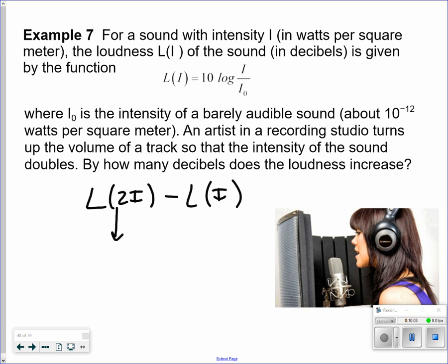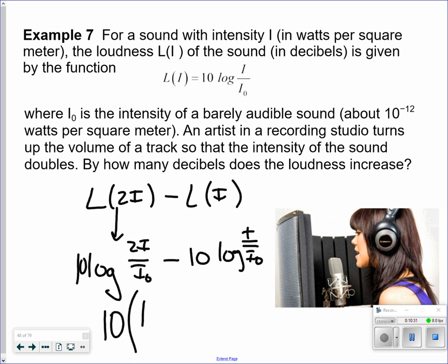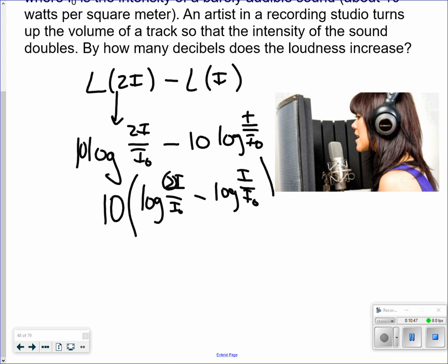So now this would be 10 log, and remember I'm doubling the I here, so 2i over i sub 0 minus 10 log of i over i sub 0. All right, I'm going to take a 10 out, like a GCF. So I have log of 2i over i sub 0 minus log i over i sub 0. Now, I don't want that 2 to be there. So because it's 2 times, right, I could break this down using my rules of exponents into log of 2 plus log of i over i sub 1. I sub 0, sorry.